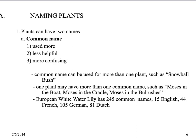Or one plant may have more than one common name. One particular example is Moses in the Boat or Moses in the Cradle. One of the trees we'll look at in our labs has the common name of Osage Orange, Hedge Apple, Bodark, Horse Apple — just four right there. So one person may know it as Hedge Apple, another as Bodark, and they don't realize they're talking about the same plant. The European white water lily has an amazing amount of common names, so that could be very confusing if you're trying to use the common name.